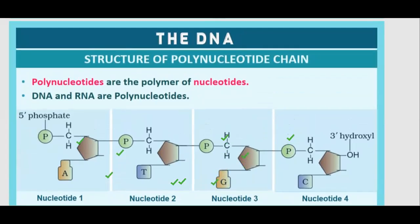Polynucleotides are the polymers of nucleotides. DNA and RNA are polynucleotides — they are made up of many nucleotides. Poly means many, nucleotides means nucleotide chains. So DNA and RNA are polynucleotides.